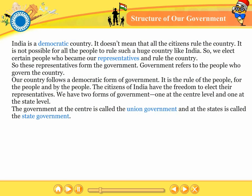Our country follows a democratic form of government. It is the rule of the people, for the people, and by the people. The citizens of India have the freedom to elect the representatives. We have two forms of government — one at the central level and one at the state level. The government at the center is called the union government, and at the state it is called the state government.